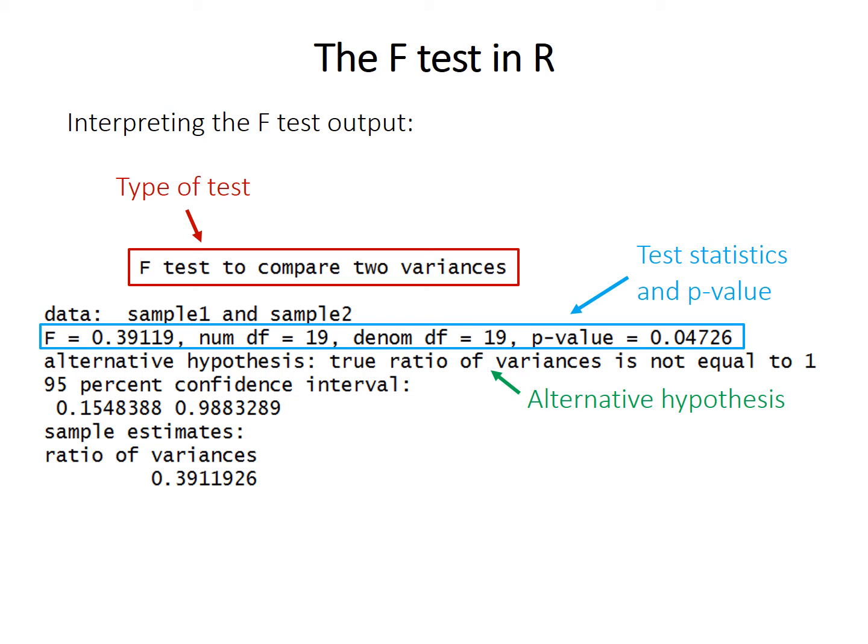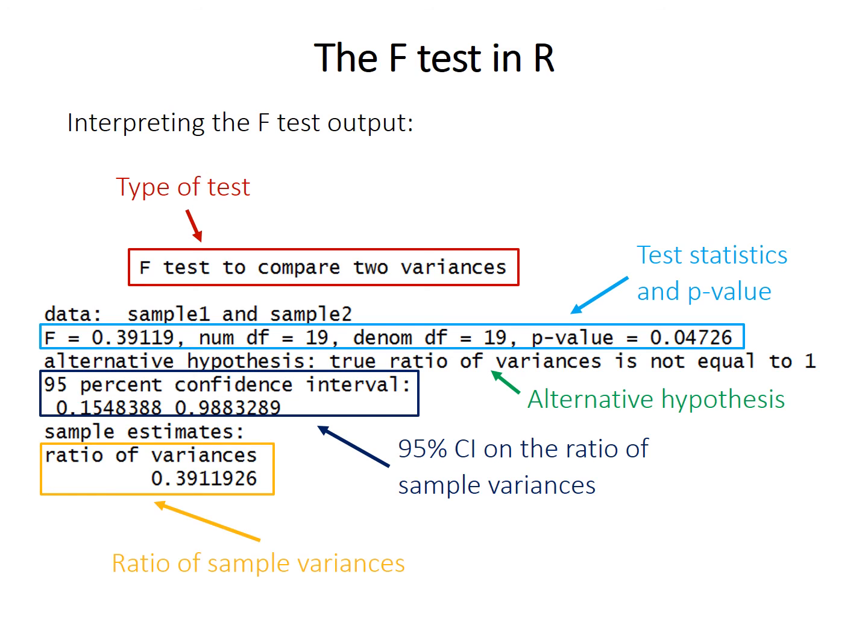It tells you the alternative hypothesis that you're using. In this case, specified as a ratio, but if the ratio is not equal to one, that's the same thing as saying there is a difference in the variances. The output also gives you the 95% confidence interval on the ratio of sample variances, as well as the actual ratio of variances. But the last point is not really that useful; we don't necessarily care about the actual ratio of variances.